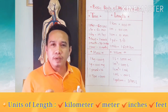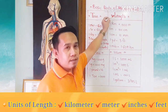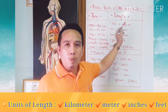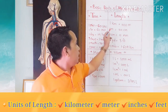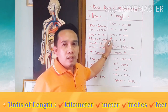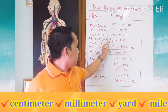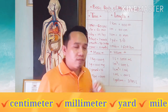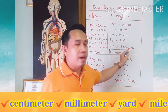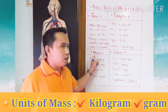What about measuring length? Remember: 1 kilometer is equal to 1,000 meters; 1 meter is equal to 100 centimeters; 1 centimeter is equal to 10 millimeters; 1 yard is equal to 3 feet; and 1 mile is equal to 1.609 kilometers.